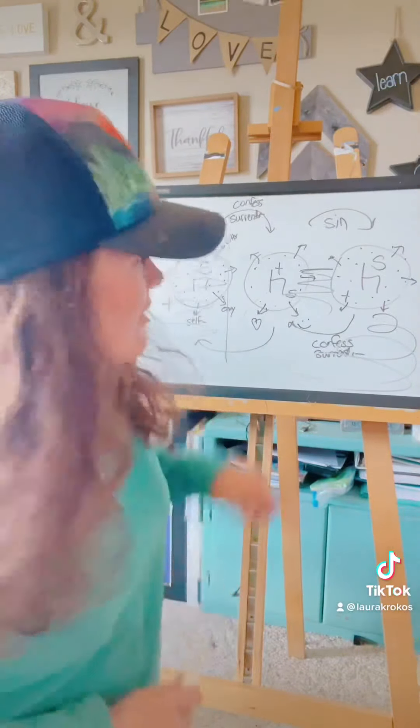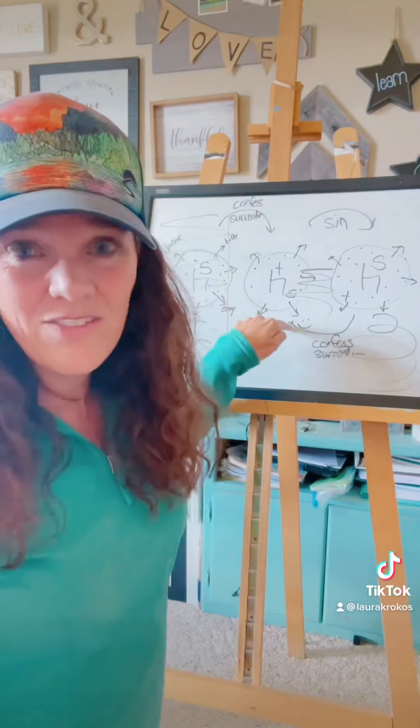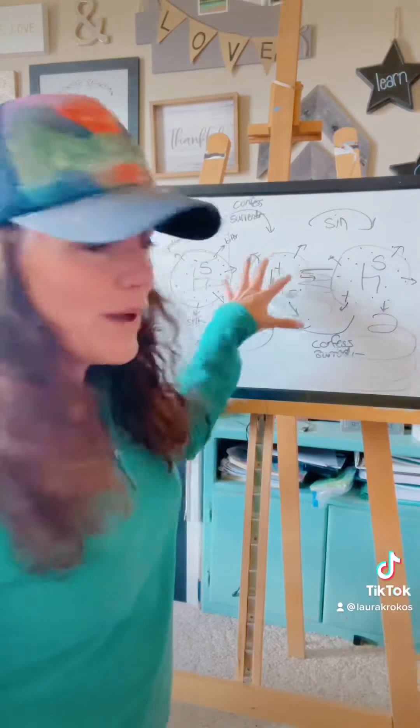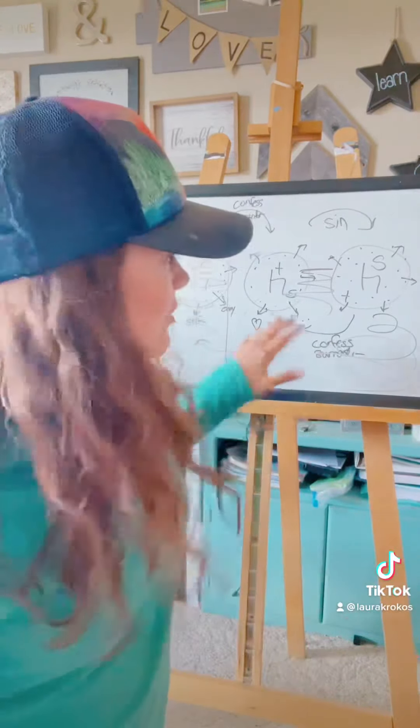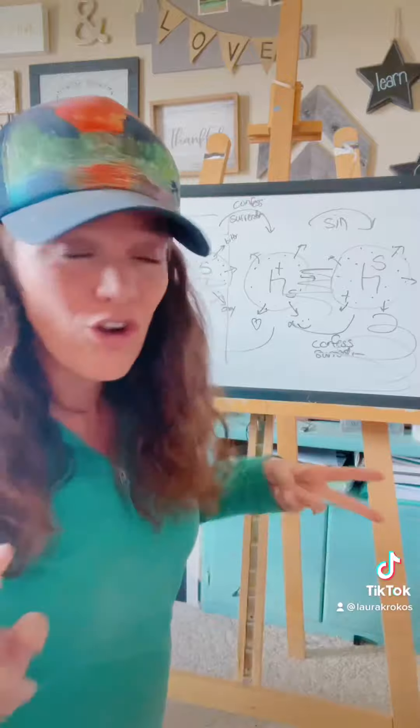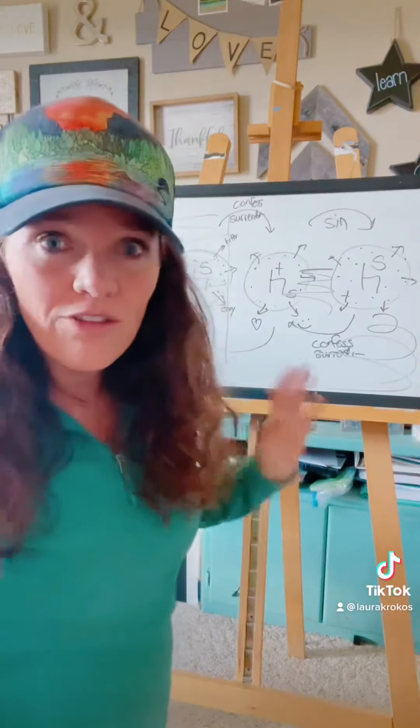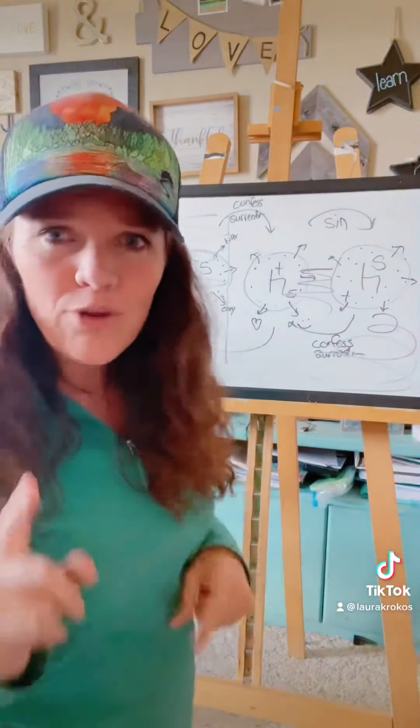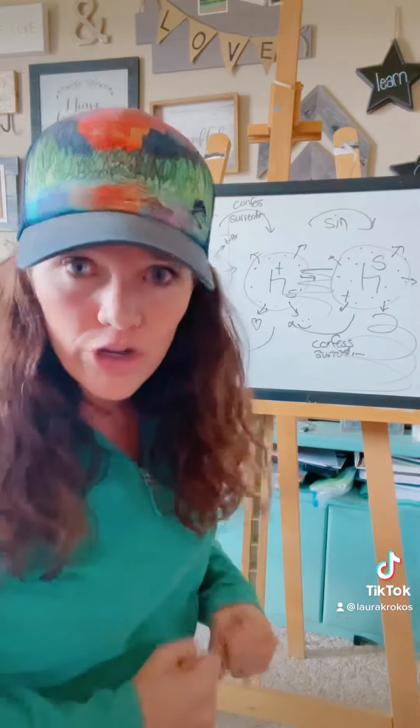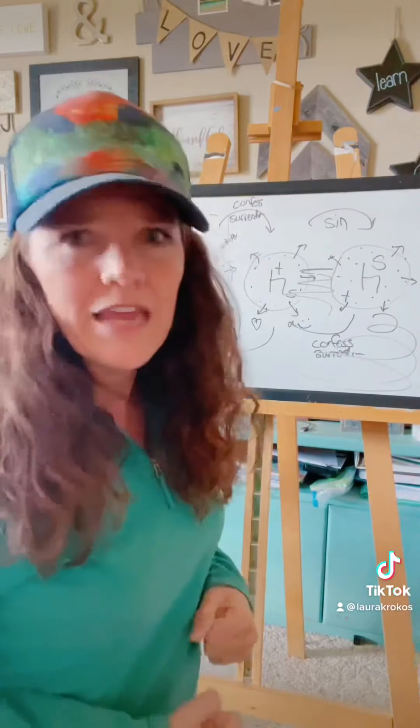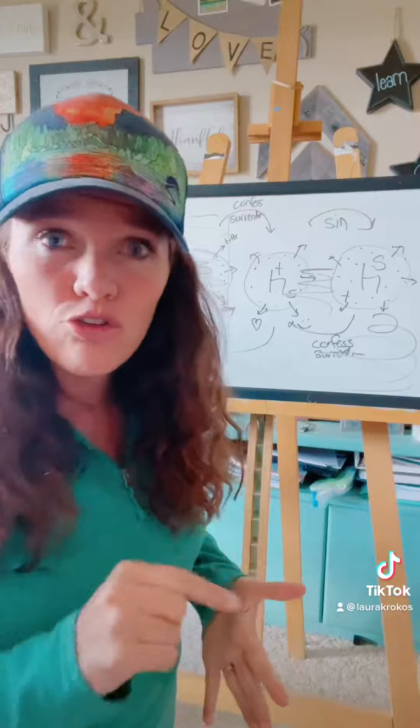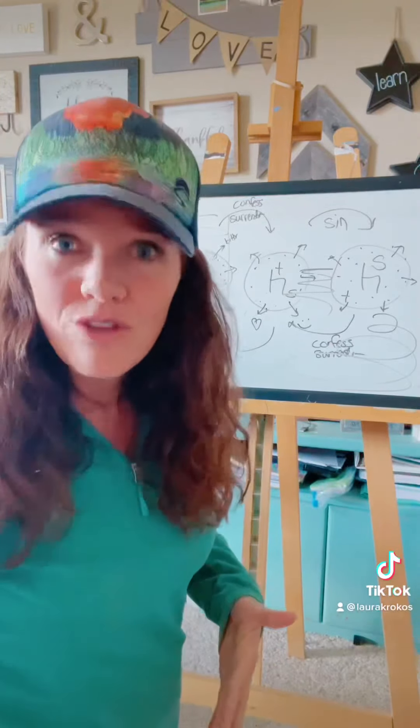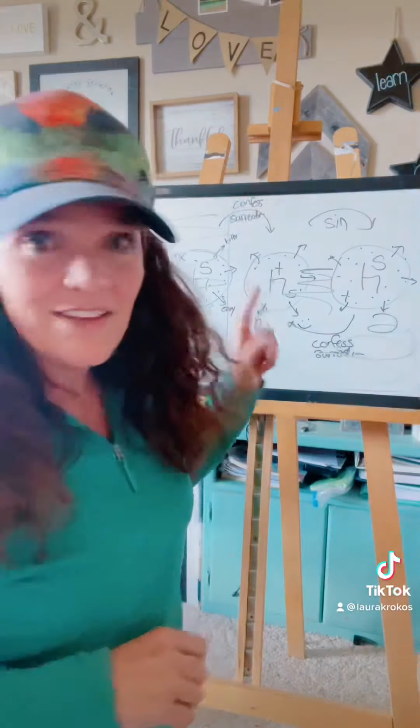This is how you live the Christian life. This is the only way that we can live the Christian life is if God does it through us. This is also called remaining in Christ, abiding in Christ, the spirit-filled life. It's called lots of things, but an apple doesn't grow because it tries real hard. I'm going to be patient today. That's not how it works. An apple grows because it stays connected to the vine, stays connected as tree.